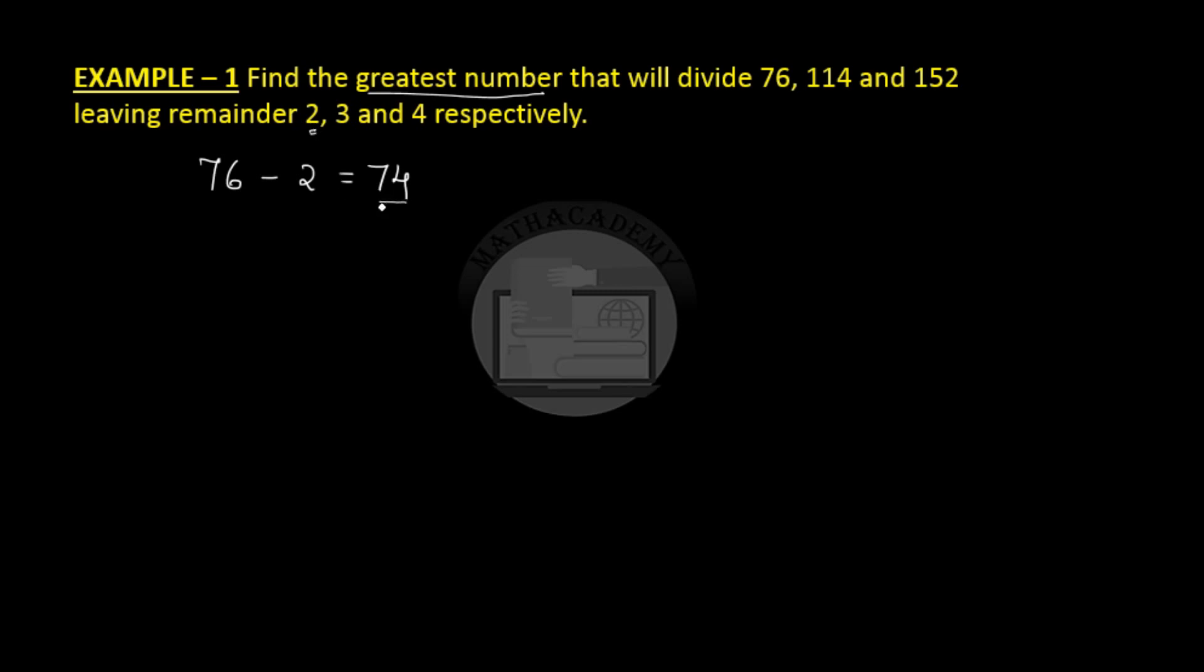This means that the number that is exactly divisible by that greatest number is 74 or 111 which is the second number and the third number that is exactly divisible by the greatest number which we have to find out will be 148 which will be 152 minus the remainder. So the greatest number that will divide is nothing but your greatest or the highest common factor. A factor is a number that divides the given number completely. So the highest common factor among the three should be the greatest number which will divide all the three numbers.